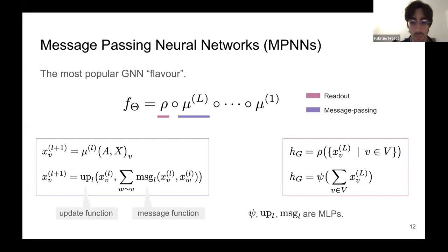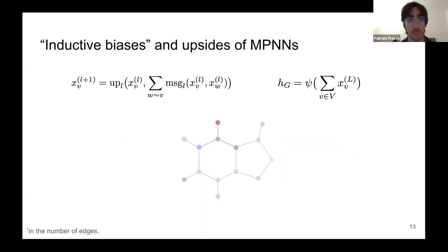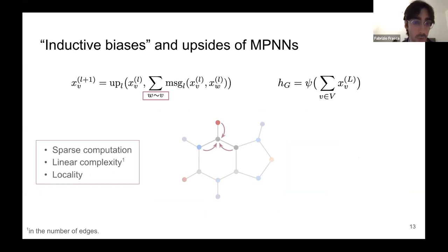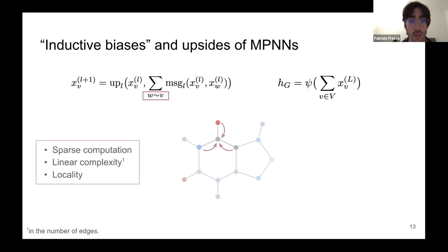We parameterize these functions with multi-layer perceptrons. Message passing is sparse: when updating a node's representation, we only aggregate from its direct neighbors. This gives a forward pass complexity linear in the number of edges, which is very advantageous. This also leads to a local inductive bias — the model learns functions that are local in the graph topology.